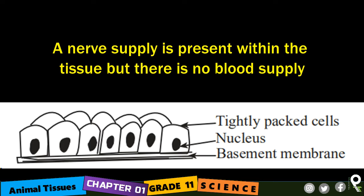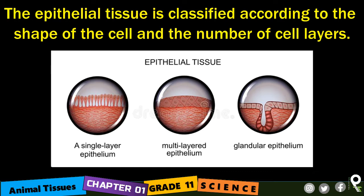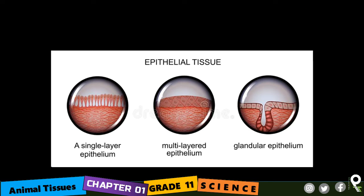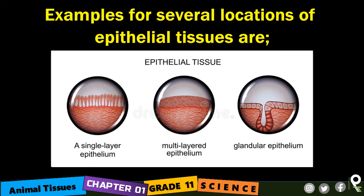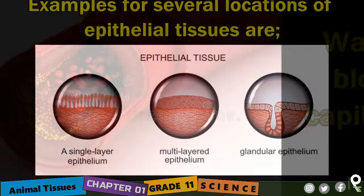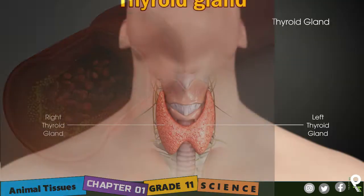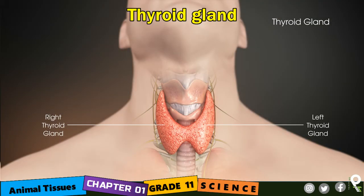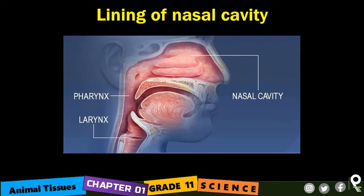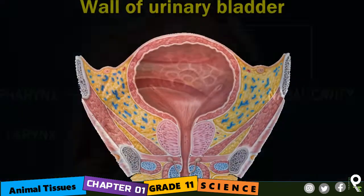The epithelial tissue is classified according to the shape of the cell and the number of cell layers. Examples of locations of epithelial tissues include: wall of blood capillaries, thyroid gland, lining of nasal cavity, wall of urinary bladder, and skin — also called the epidermis.